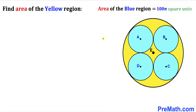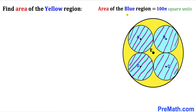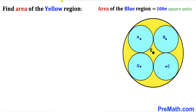Welcome to pre-math. In this video we have four identical blue circles fully inscribed in a big circle, as you can see in this diagram, such that the area of the blue shaded region is 100π square units. Our task is to calculate the area of the yellow shaded region — combined all of this yellow shaded area.